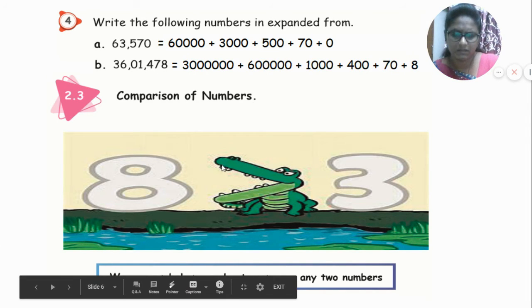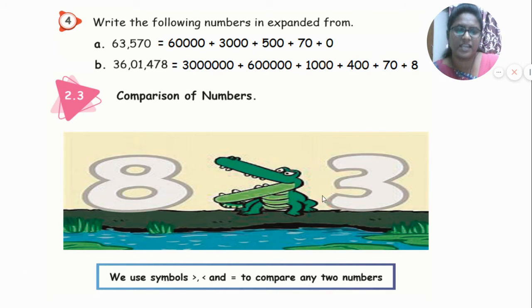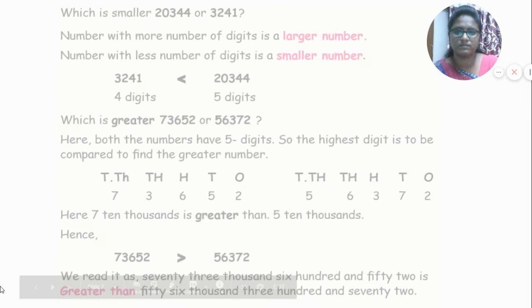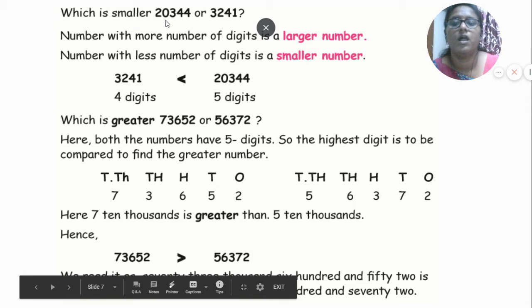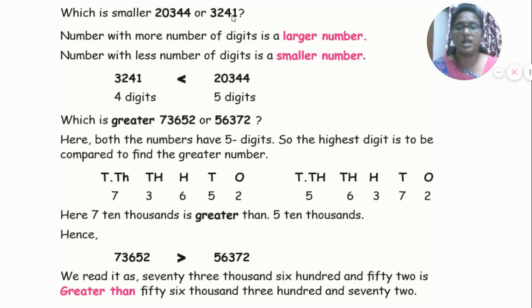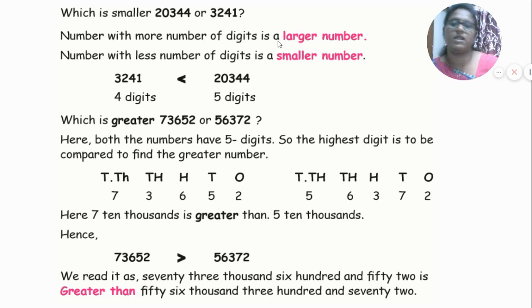The pointed area of the symbol faces the smaller number — this is lesser — and the open wide area faces the larger number. For example: which is smaller, 20,344 or 3,241? A number with more digits is larger; a number with fewer digits is smaller. So 3,241 is lesser than 20,344.